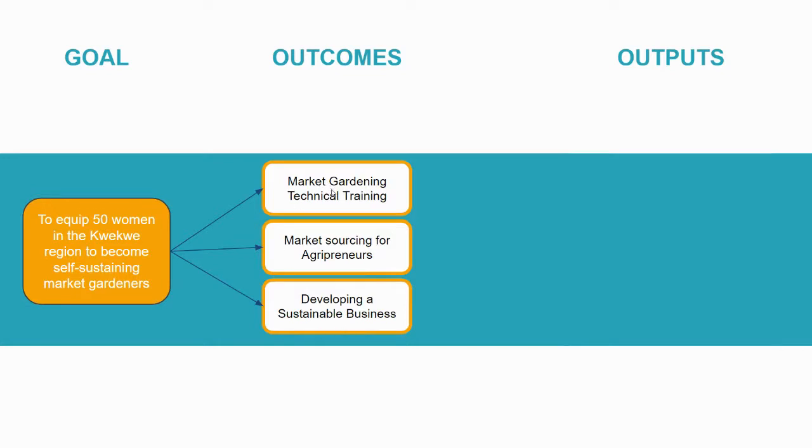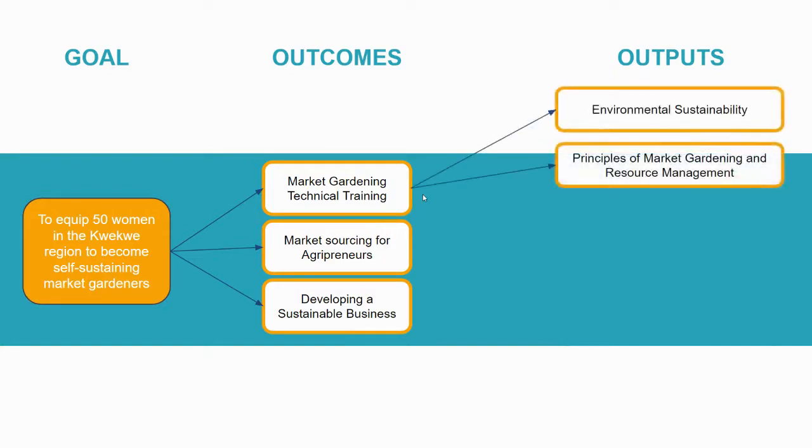And so they've got these three separate sets of trainings that are essentially aiming to achieve the goal that we have. And these three separate training sessions each have their own set of outputs. The market gardening technical training results in environmental sustainability for our community. It also results in principles of market gardening and resource management. This could be a silo all on its own.